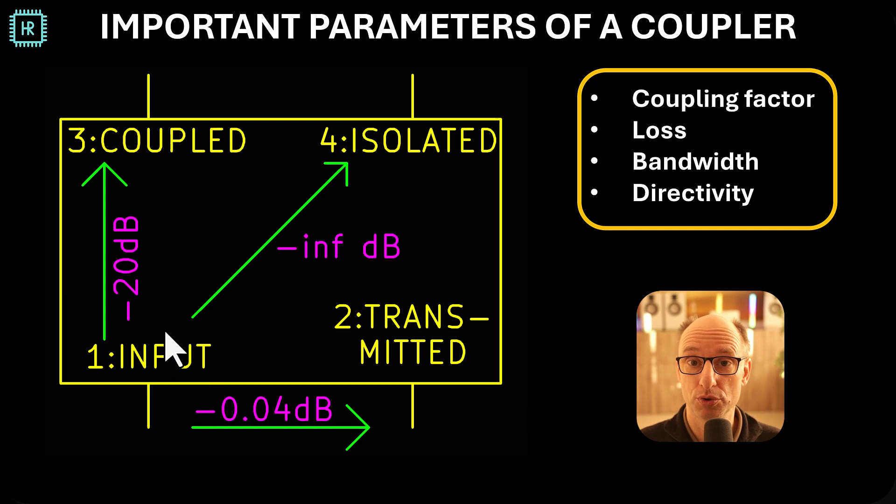So it's good to realize what directivity means. Basically if you want to use this thing to measure the difference between the transmitted and reflected power, if your directivity is infinite you will only see on this port a portion of the power moving from left to right. And on this port you will only see a portion of the power moving from right to left. Now the lower the directivity the more you get a little bit of both at each port. So that means you have to calibrate for it if you want to do very accurate reflection measurements. So a high directivity is something that you would like to have in a coupler.